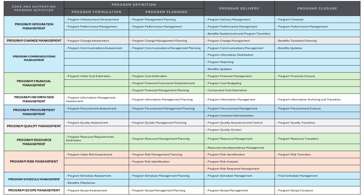Program schedule management ensures that the program stays on track and is delivered on time. High-level scheduling and key milestones are established to track the program's progress during the assessment phase. Program schedule management planning creates a detailed plan to manage the program's schedule and ensure that all components are delivered on time. During the delivery phase, schedule management ensures that all activities are completed according to the timeline. At closure, the schedule is finalized and any remaining tasks are completed.